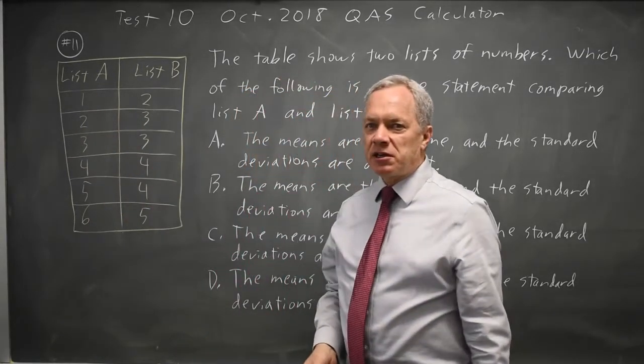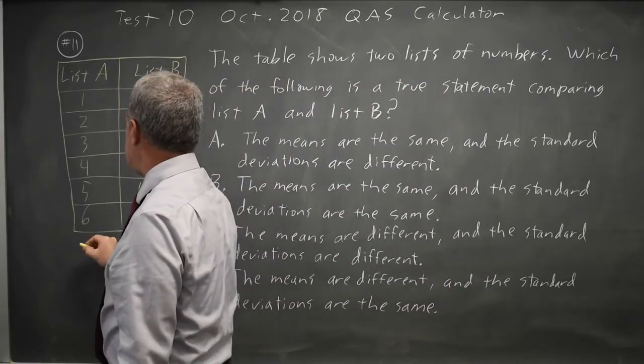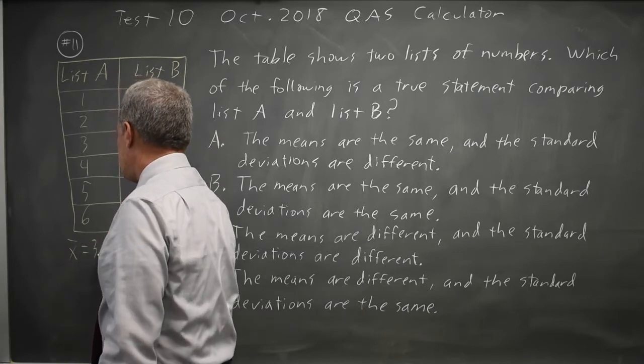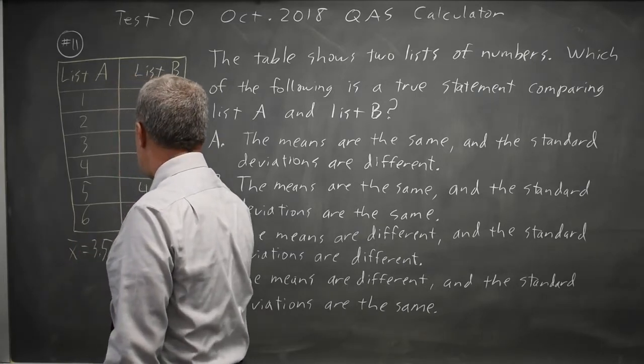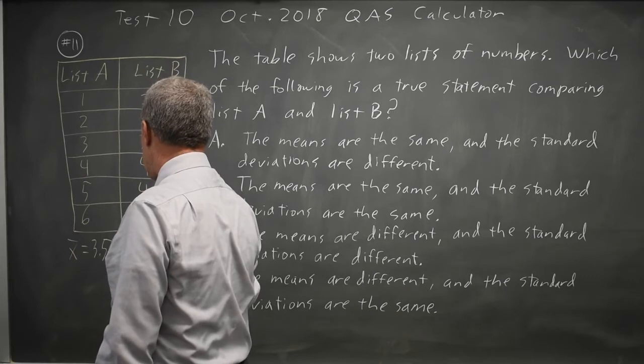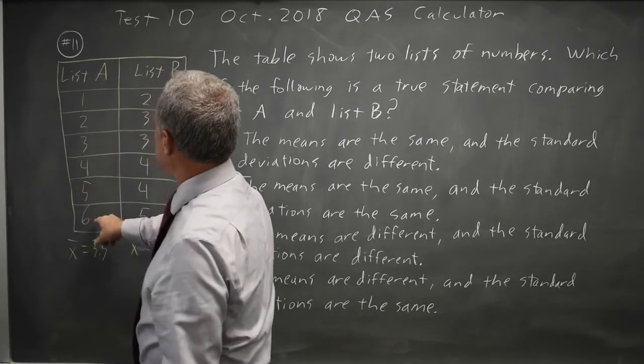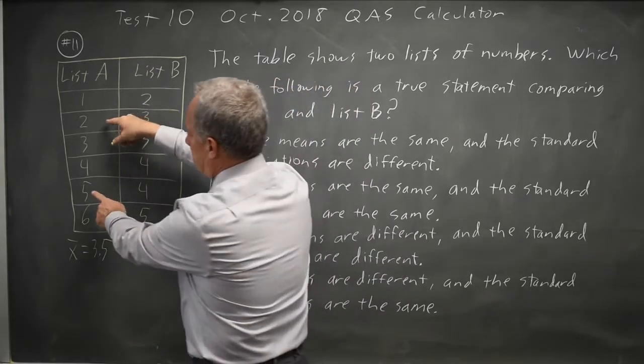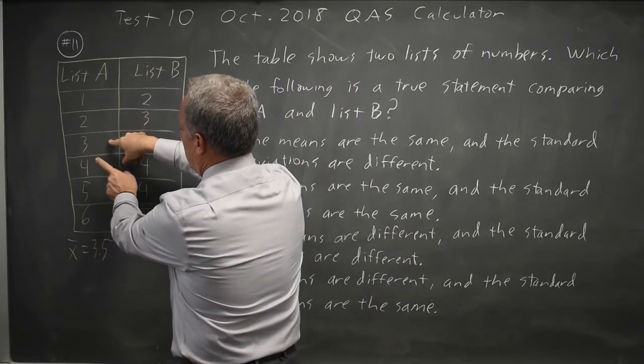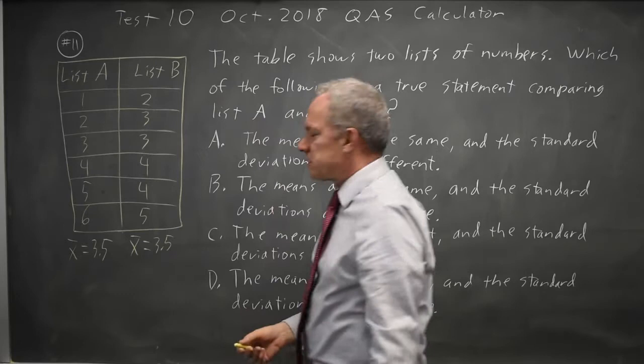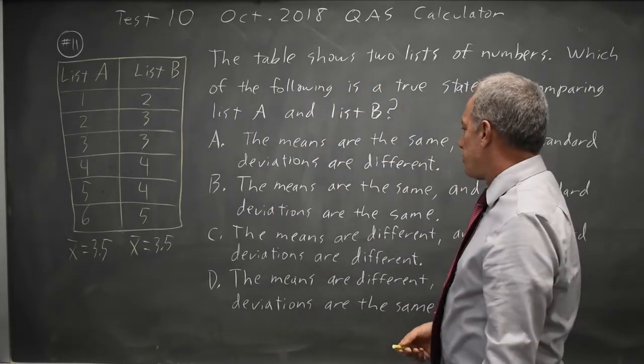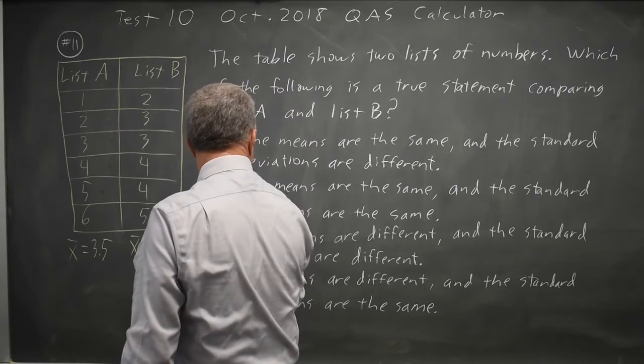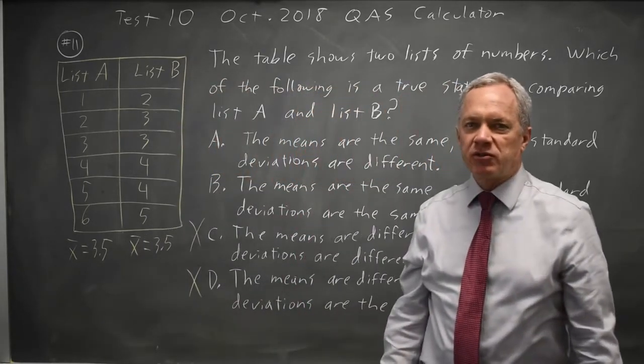Without a calculator, you can quickly see that the mean for list A is 3.5, and the mean for list B is also 3.5. The average of the first and last numbers, they add up to 7, so they average 3.5. Same for second and second to last, and third and third to last for both lists. So they both have the mean of 3.5, which rules out choices C and D that say the means are different.